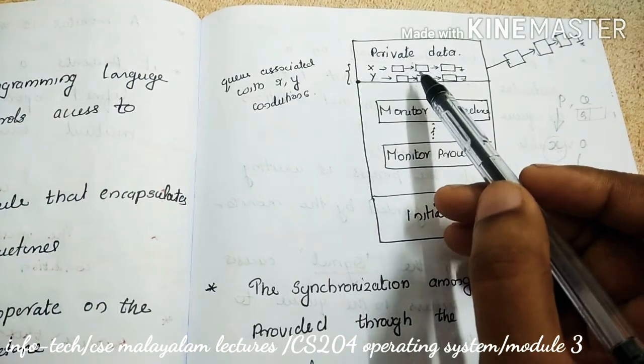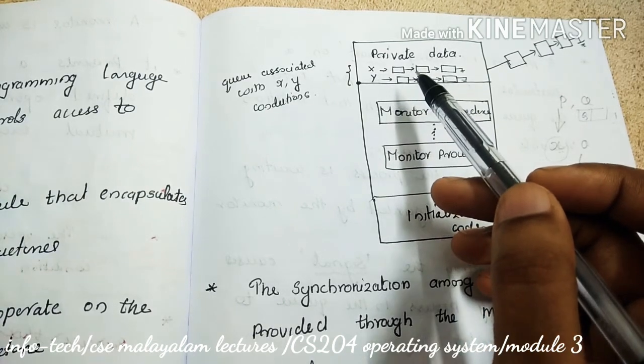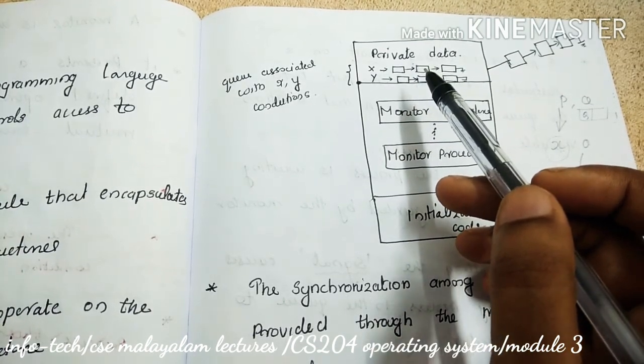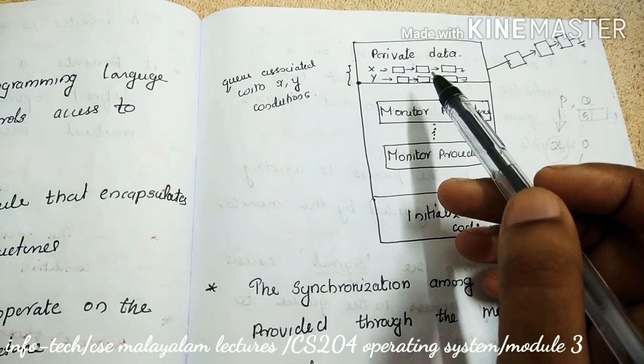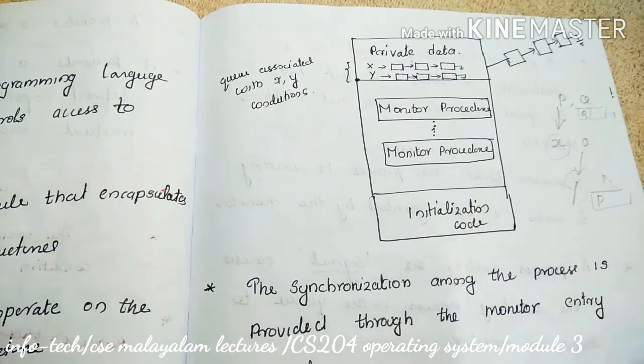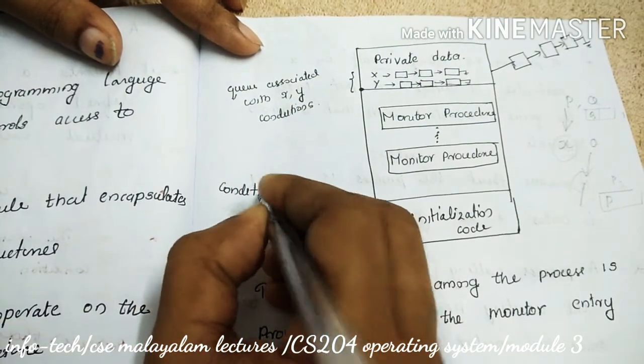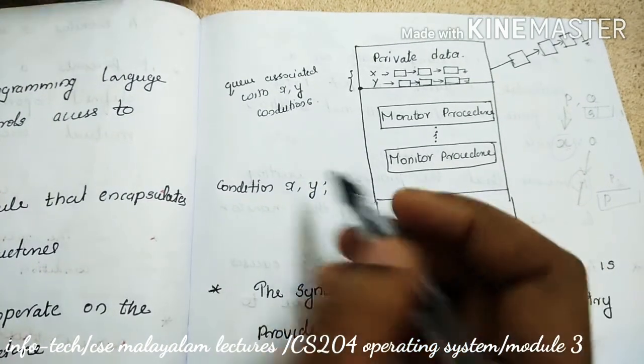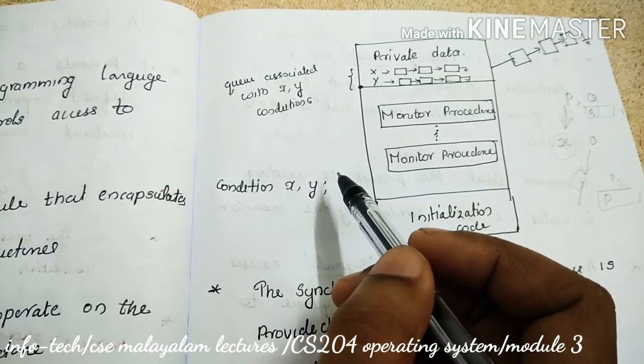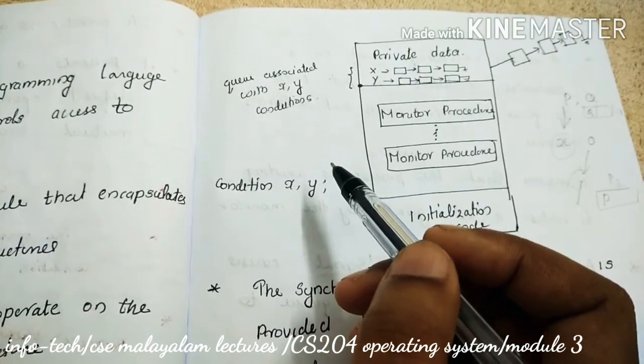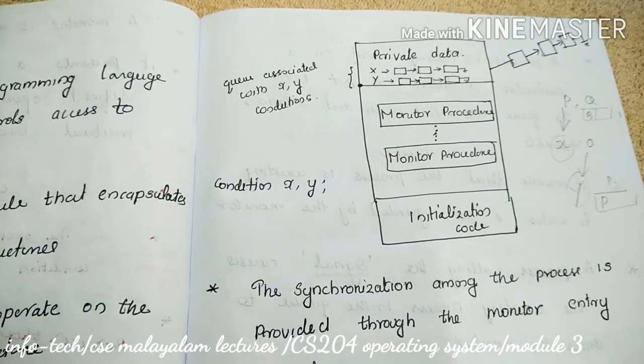In private data, there is a concept of condition variables. If we use the monitors, one is condition variables. Condition x, y is the one that we declare. For example, condition x, y. So condition x, y is the one that we declare, and that means x and y variables are used based on a particular condition.